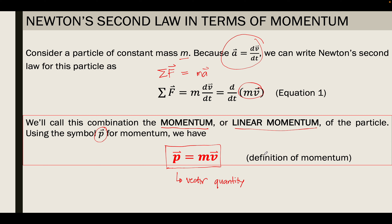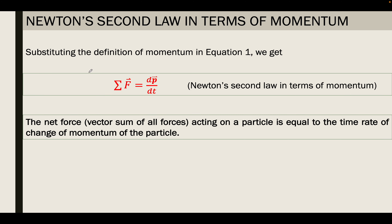Momentum P is equal to the mass times the velocity of the particle or object. Take note that momentum is a vector quantity, so it must have both magnitude and direction. Substituting the definition of momentum in equation one — where the net force F is equal to the time rate of change of mass times velocity — if we substitute P as mass times velocity, Newton's second law in terms of momentum becomes: the net force F, or the sum of all forces, is equal to the change in momentum over the change in time.